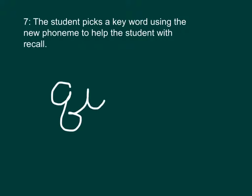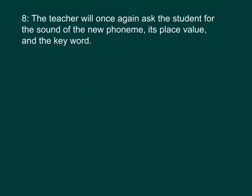The teacher asks the student for the sound of the new phoneme, its place value, and the keyword. The sound is qu (qua), it appears in the beginning or the middle of words, and the keyword is quest.